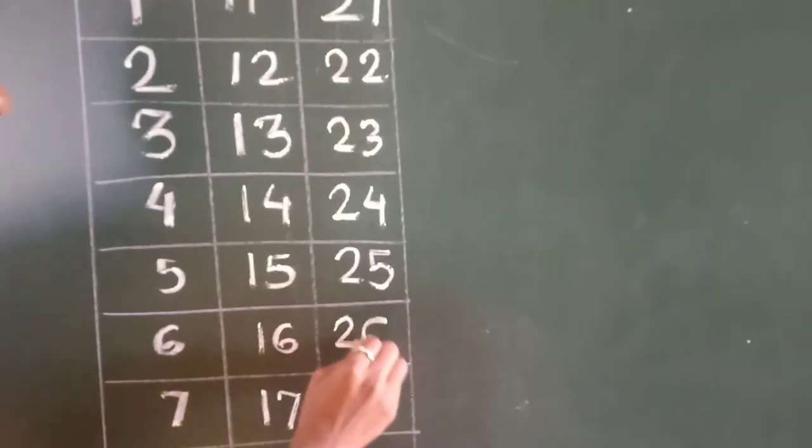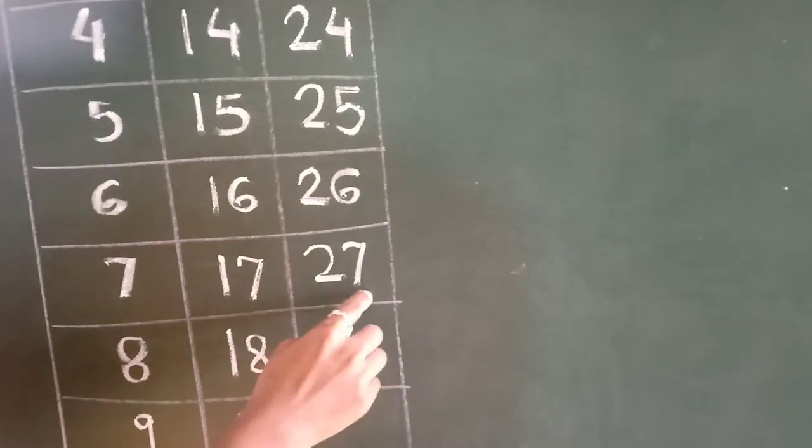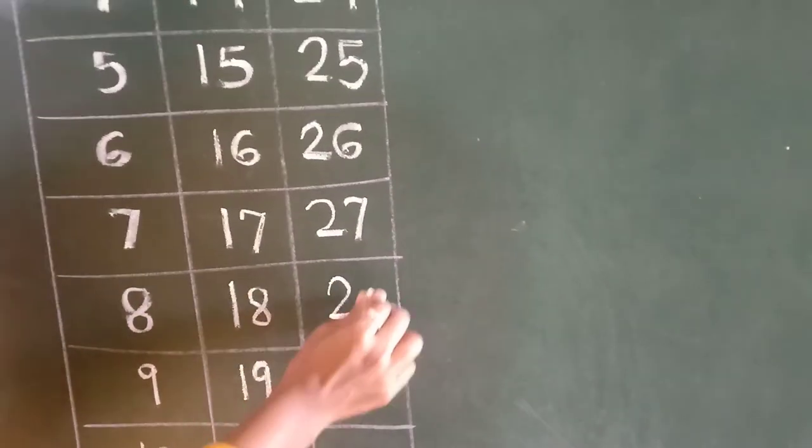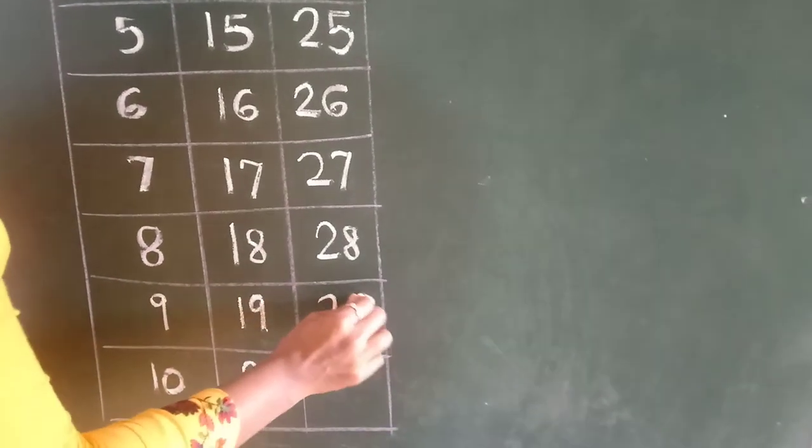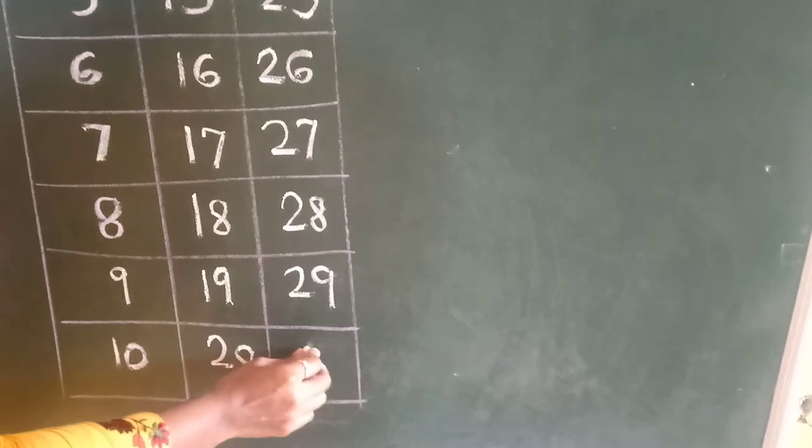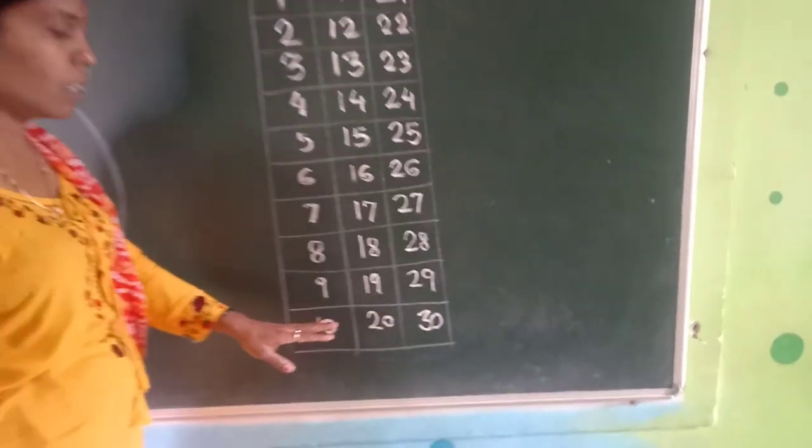2, 6, 26. 2, 7, 27. 2, 8, 28. 2, 9, 29. And 3, 0, 30. 3, 0, 30.